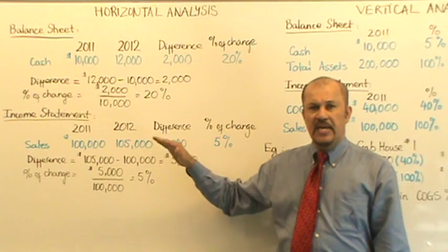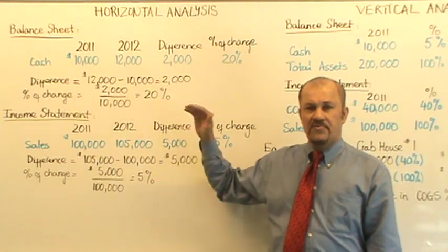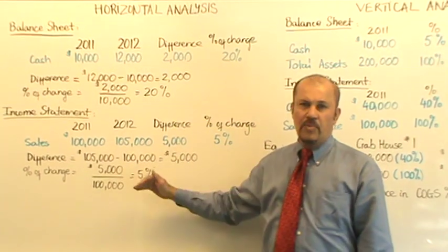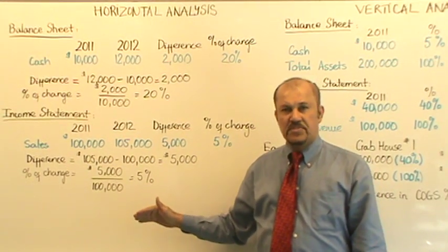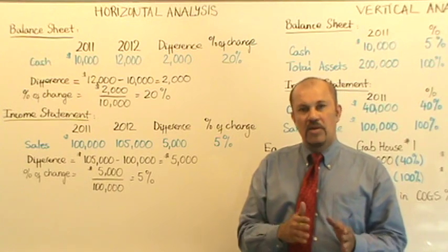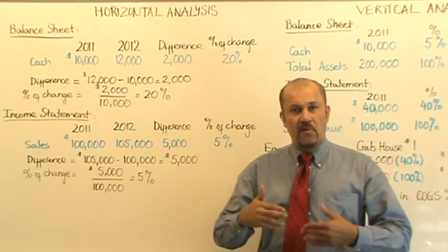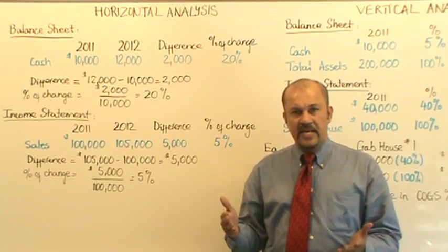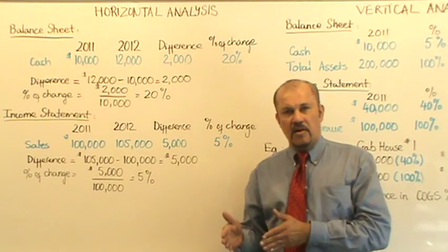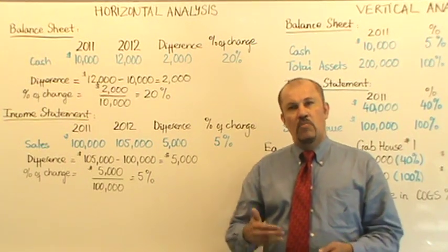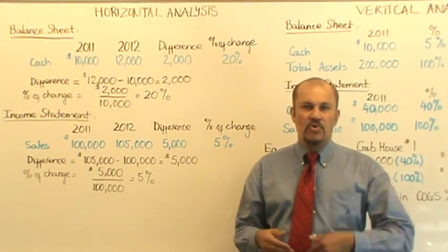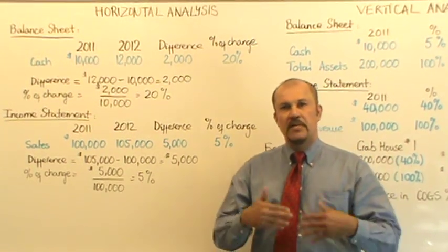This is a brief example of the horizontal analysis on the balance sheet as well as on an item on the income statement. Regardless of whether it's a balance sheet or income statement, you can see we followed the same two steps. Step one: calculate the increase or decrease from the base year to the current year. Step two: express that increase or decrease as a percentage of the old year, the base year.